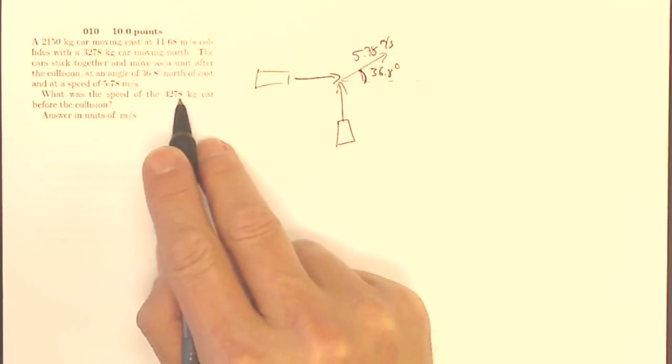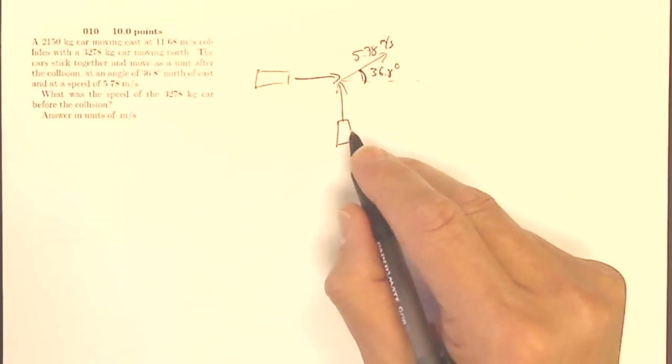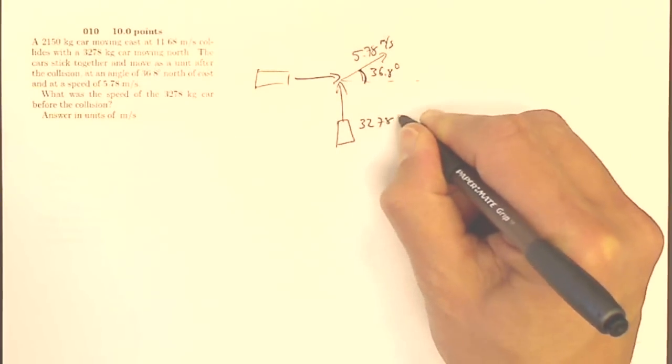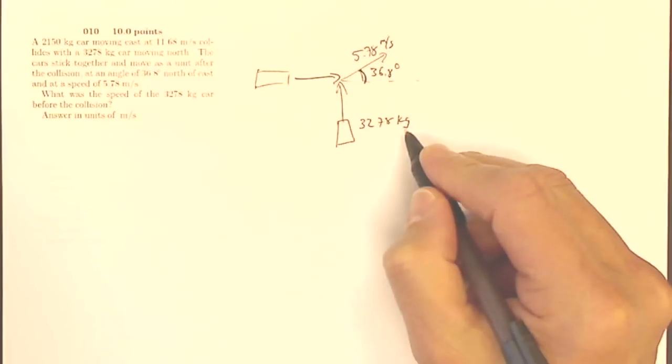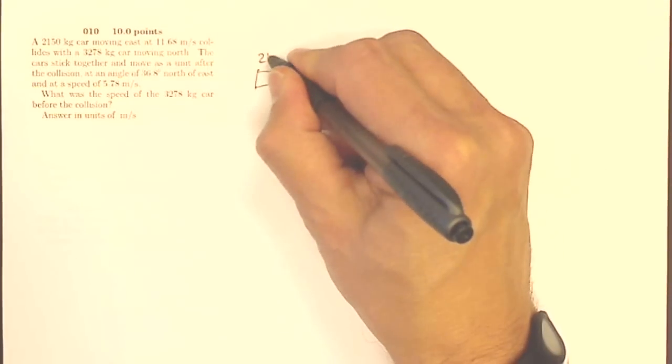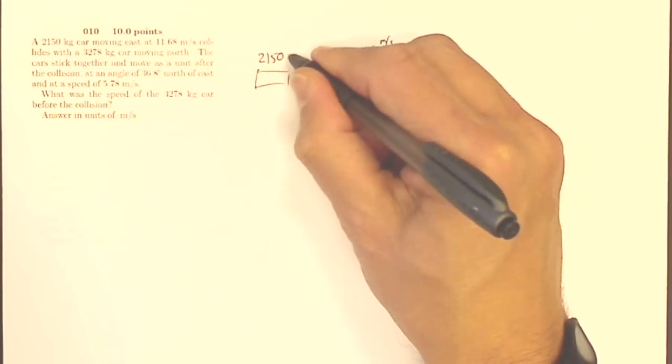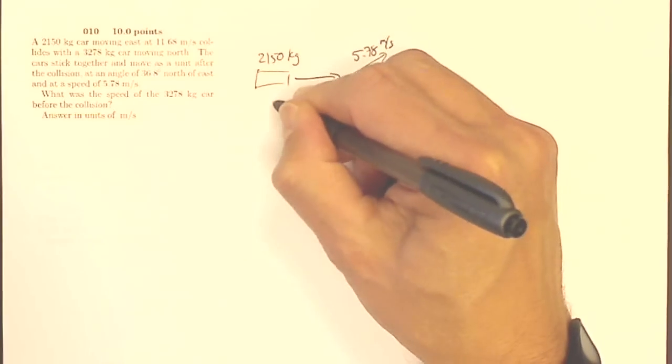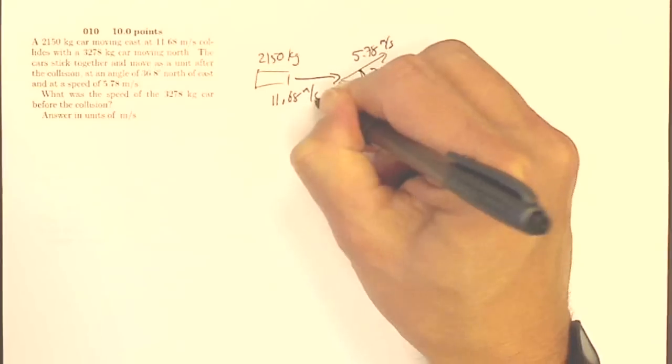What was the speed of the 3278 kilogram car before the collision? That's this one, 3278 kilograms moving north, and I don't know the velocity. But this one I do, it's 2150 and it's moving at 11.68 meters per second.